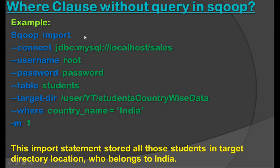Let's see the example: scoop import --connect jdbc:mysql://localhost/sales --username root --password password --table students --target-dir /path/to/target --where 'country_name = india' -m 1. We are fetching records from the students table and applying only one mapper.